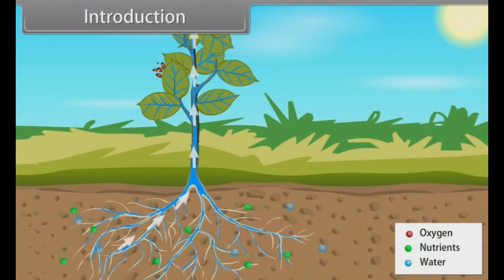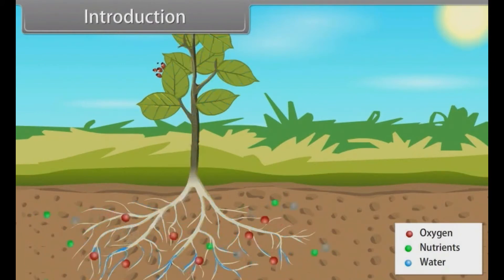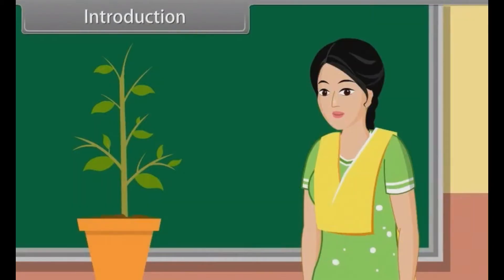One more thing I would like to tell you that there are five plant growth regulators. They are auxins, gibberellins, cytokinins, ethylene and abscisic acid. Okay, now it's time to learn about plant growth and development.